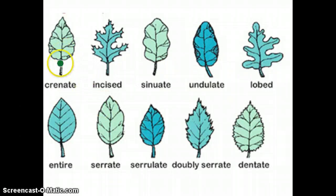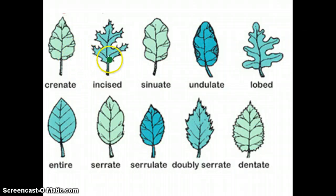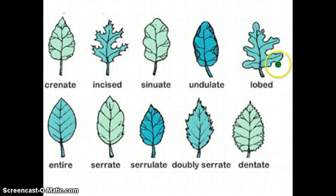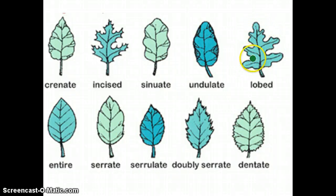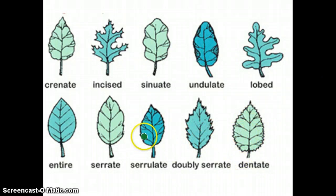Right here you have the crenate, and that one is more round but it still has bumps. You have incised, sinuate, undulate, and lobed — that one looks a little bit like a hand, so it's sometimes called the hand leaf. You also have dentate, double serrate, serulate, serrate, and entire.